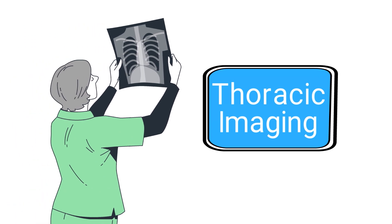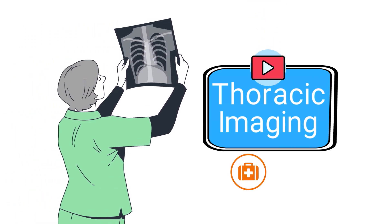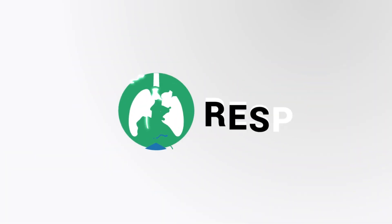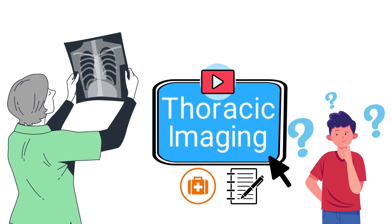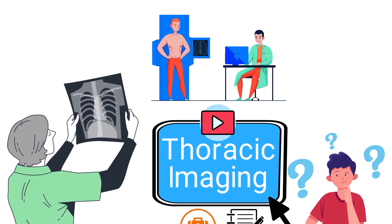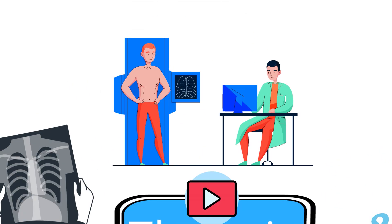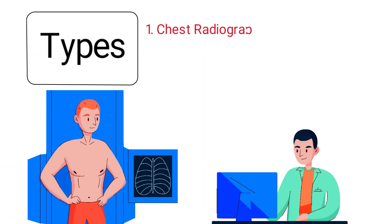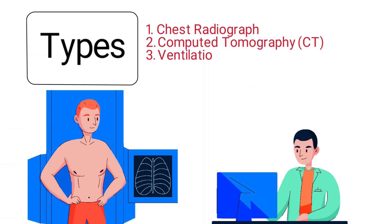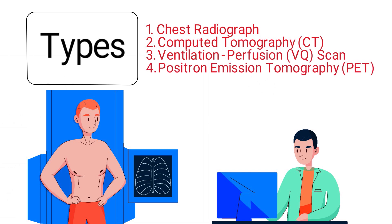Thoracic imaging refers to the radiographic assessment of the chest and thoracic region. It is the radiographic process of creating a visual representation of the thorax for medical intervention. The primary types include a chest radiograph, computed tomography, ventilation-perfusion scan, and positron emission tomography. Each type of thoracic imaging helps the medical professional learn more about the state of the patient's condition.